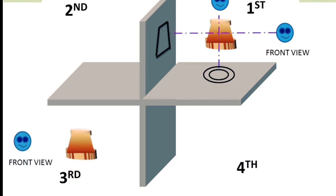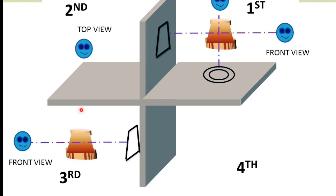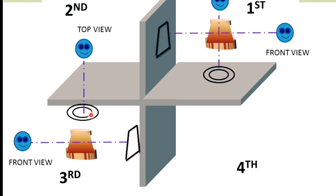In third angle projection, there is the observer and this is the object. When the front view is drawn, it will look like this. But in the top view projection, the projection plane will be in between the object and the observer. This is called third angle projection, and the top view will be made on the horizontal plane. So in third angle projection, the top view will be on the upper side and the front view will be on the below side of the top view. This is the difference between first angle and third angle projection.